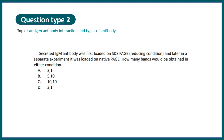This question says: secreted IgM antibody was loaded on SDS-PAGE, and later in a separate experiment it was loaded on native PAGE — how many bands would be obtained in each condition? The options are 2 & 1, 5 & 10, 10 & 10, and 3 & 1. The correct answer is 2 bands on SDS-PAGE and 1 band on native PAGE.